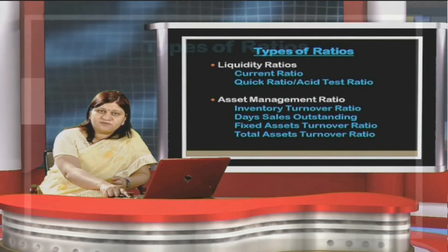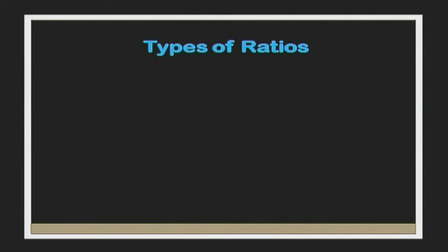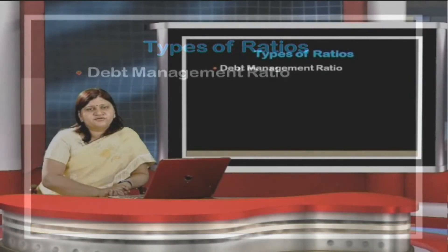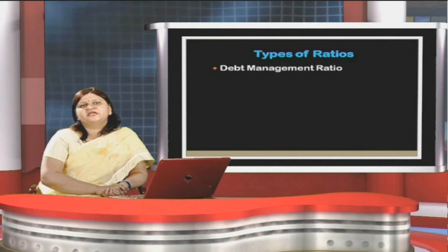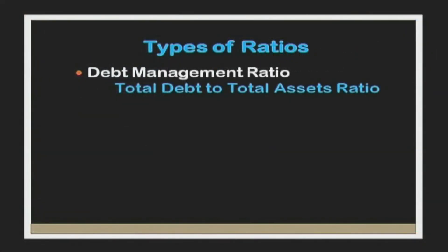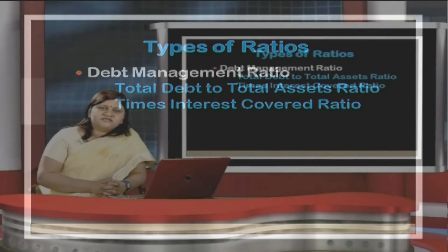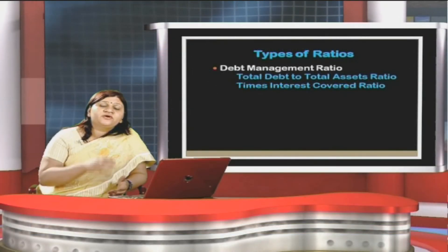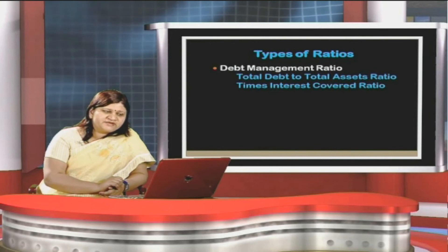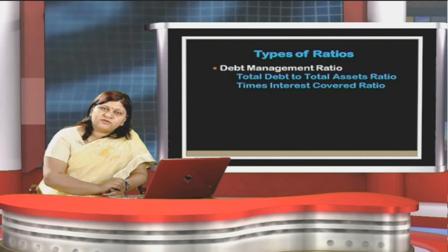Another category is debt management ratios, which concentrate on the long-term obligations of a firm. Total debts to total assets ratio is determined, as well as times interest coverage ratio — showing how much profit or funds are available with the firm to pay off its interest obligation. When a company undertakes financial debt, there is an interest charge associated with it, and the capacity of the firm to pay that interest is reflected under the interest coverage ratio.